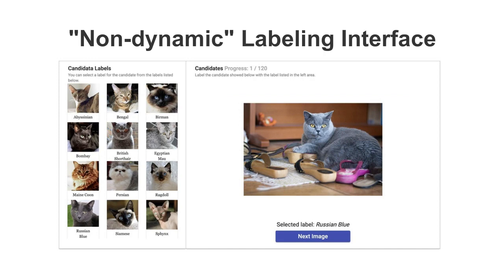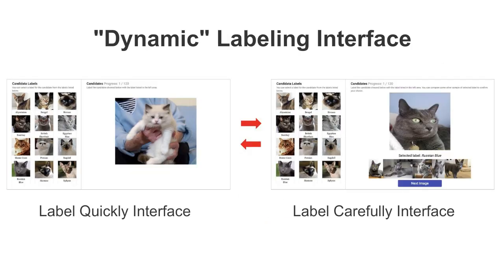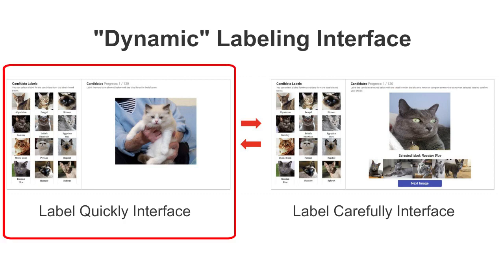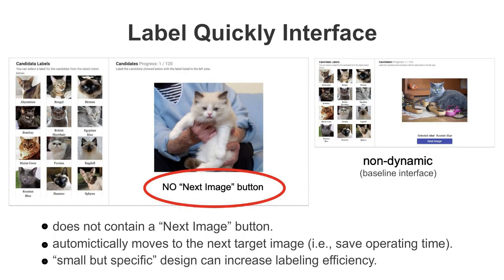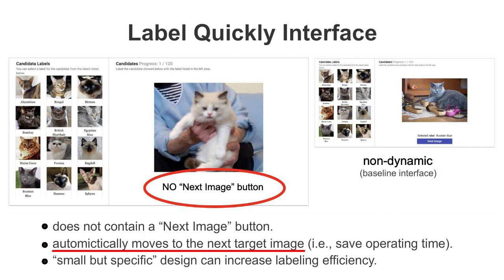After selecting a label, the user clicks Next Image to label the next image. Here shows the labeling interfaces of the proposed dynamic approach, which contains Label Quickly and Label Carefully labeling interfaces. The Label Quickly interface is almost the same as the baseline interface. The only difference is that the interface does not contain a Next Image button. After selecting a label for the target image, it automatically moves to the next target image.